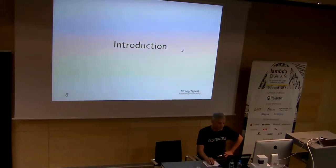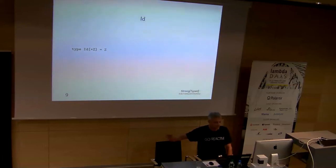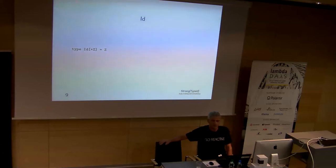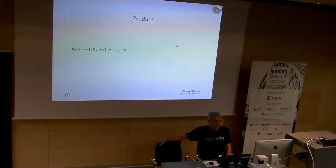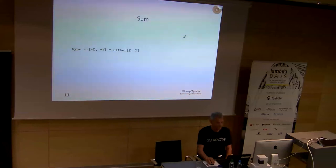Let's start with an introduction. I'm going to describe a type synonym: the identity of Z is just Z. Think about it for the moment as a value in a box — it's actually a type synonym, but think of it as a value in a box. Everything I'm doing also takes variance into account. I'll define two-star notation as infix notation for products and similarly for sums, so I can use nice infix syntax. They are just the Either and the product which are built in.